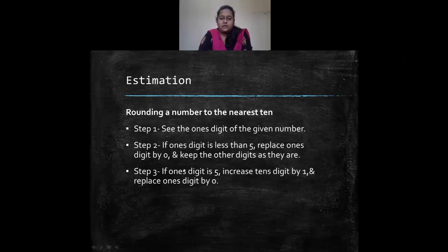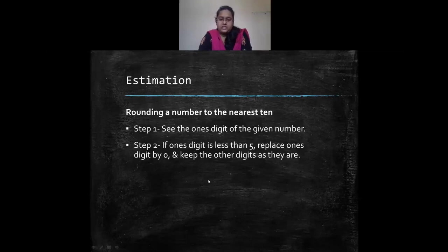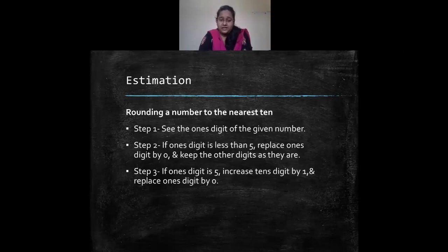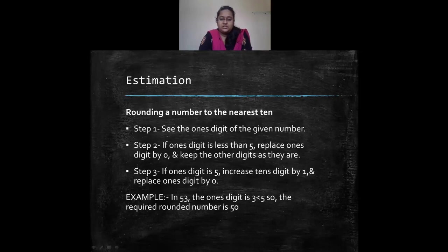For example, if the number is 24 and you round to the nearest 10: the ones digit is 4, which is less than 5, so replace 4 with 0. So 24 is rounded to 20. If the ones digit is 5 or greater than 5, increase the tens digit by 1 and replace the ones digit by 0. So in 53, the ones digit is 3 (less than 5), giving 50. But if the number were 56, the ones digit 6 is greater than 5, so you add 1 to 5, making it 6 and the ones becomes 0 — so 56 rounds up to 60.